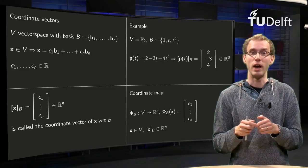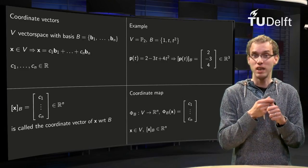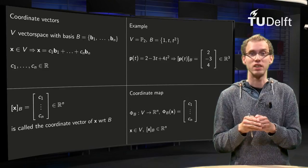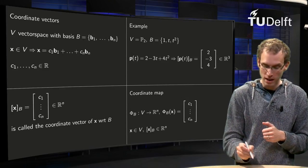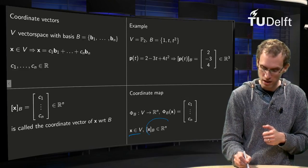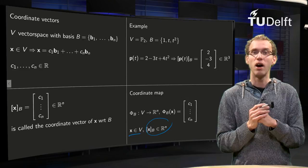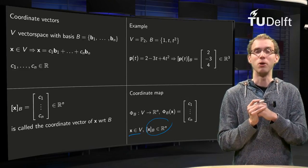So actually you have a map linking your vectors in V to normal vectors in R^n by a mapping called φB, and the x will be in V, and the nice part is that the xB will be in R^n. So that's what we are going to use later on.